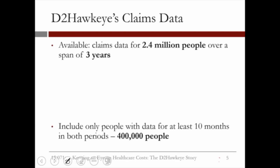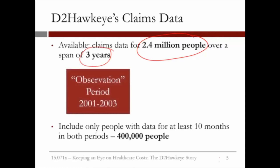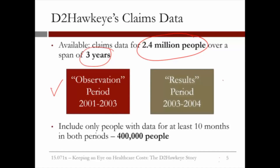The specific exercise we are going to see in this lecture is an analytics approach to building models, starting with 2.4 million people over a three-year span. The observation period was 2001 to 2003. Out of sample, we make predictions for the period 2003 and 2004. This was in the early years of D2 Hawkeye.